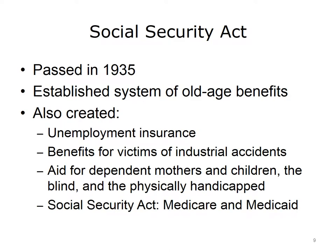In 1935, President Franklin D. Roosevelt pressed for Congress to pass the Social Security Act as part of the New Deal during the Great Depression. One of the law's major effects was establishing old-age benefits for people who had been employed — today's Social Security. However, the law also created a number of other benefits, including unemployment insurance, as well as aid to victims of industrial accidents, dependent mothers and children, the blind, and the physically handicapped. Later, amendments to the Social Security Act allowed for the two large federal payment programs, Medicare and Medicaid.